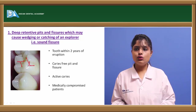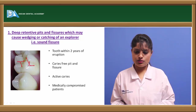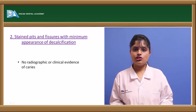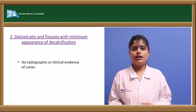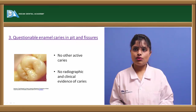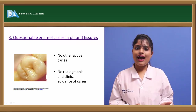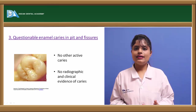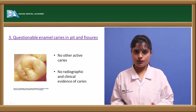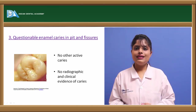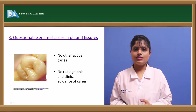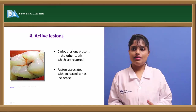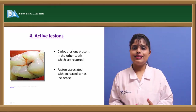It is also used in medically compromised patients. It can be used in patients who have stained pits and fissures but without any radiographic involvement of the caries process. No other active lesions should be present in the oral cavity and no radiographic or clinical evidence of caries should be there. The morphology of the tooth can be evident. In such teeth, pit and fissure sealants can be applied. It can also be used on a community basis or a routine dental health care basis.